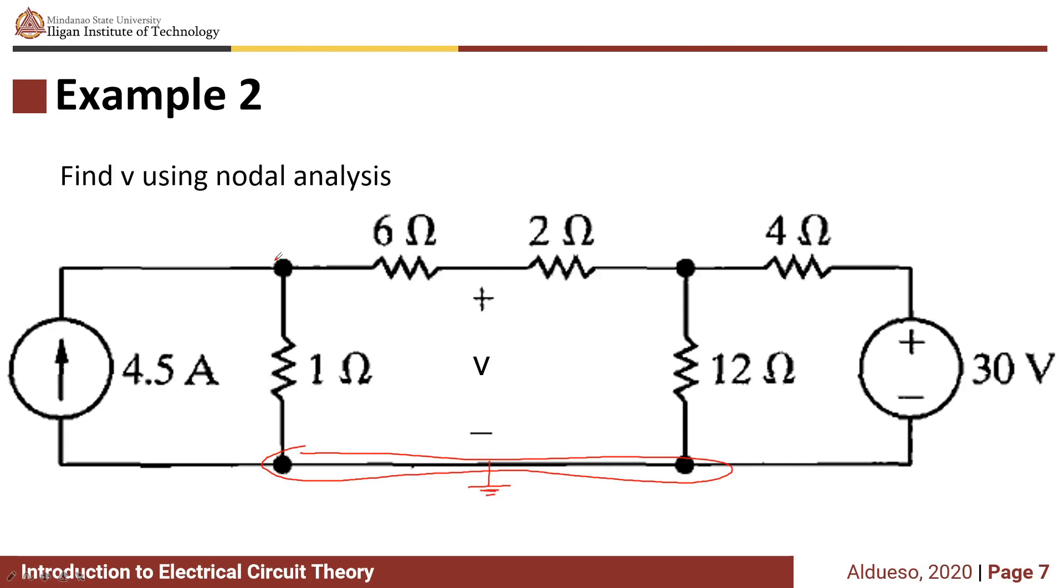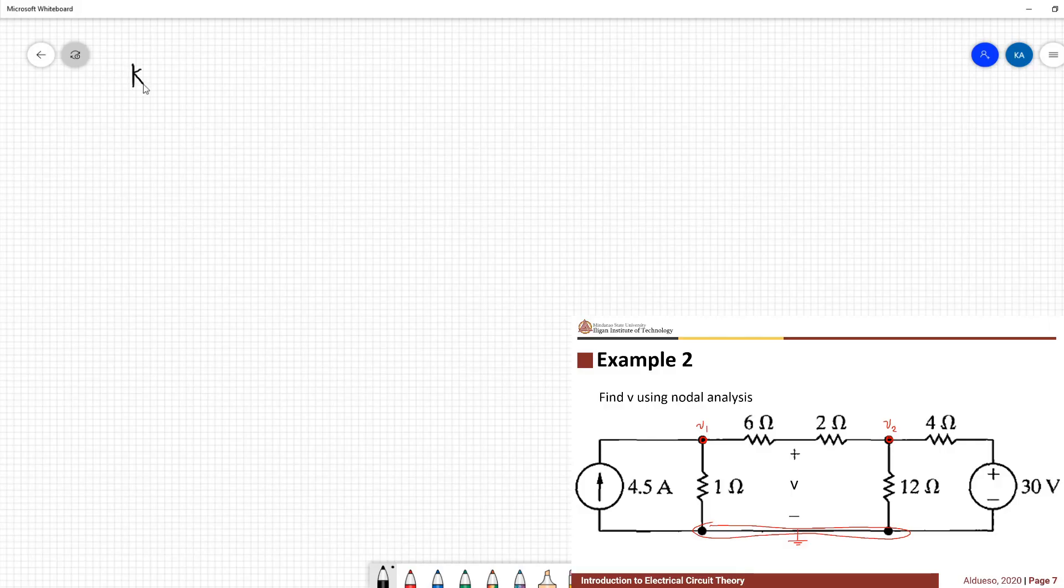Then we have node right here, all voltages V1, and then V2. KCL at node V1.